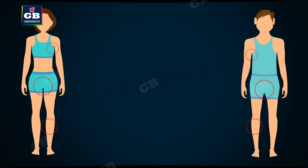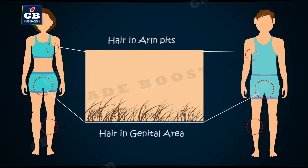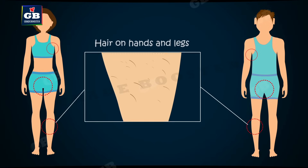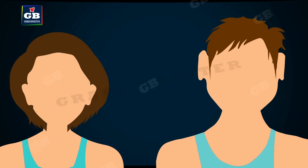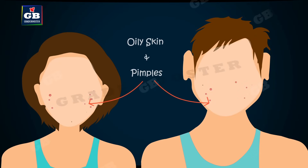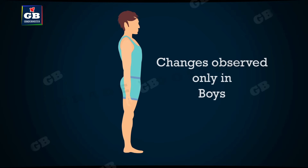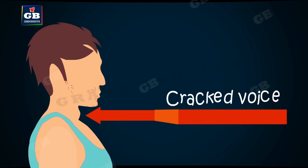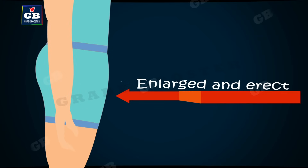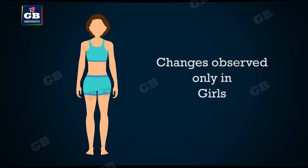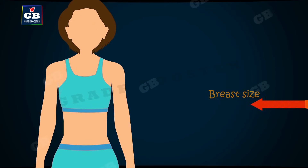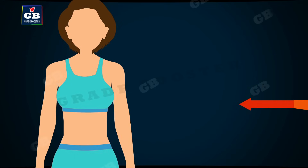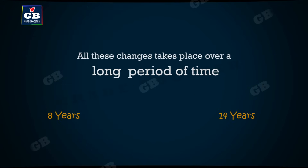Some changes are common in both boys and girls: thick hair grows in new parts of the body such as armpits and the genital area, the skin frequently becomes oily and pimples may develop. Changes observed only in boys include growth of hair on the face, voices begin to crack, and the penis occasionally begins to enlarge and become erect. Changes observed only in girls include breast size beginning to increase with darkening of the skin of the nipples, and they begin to menstruate.